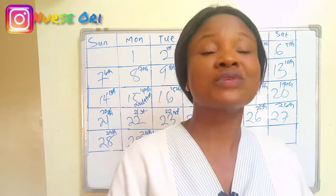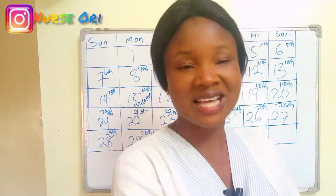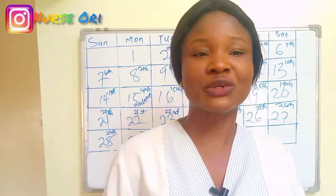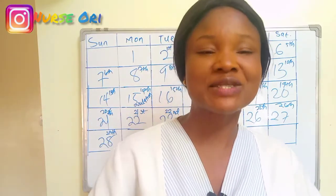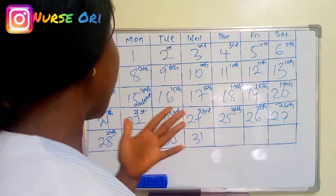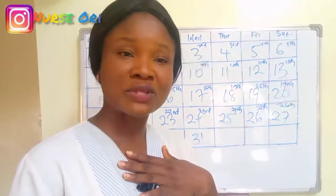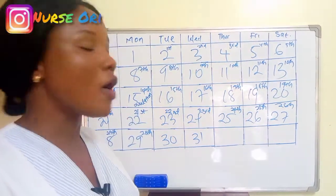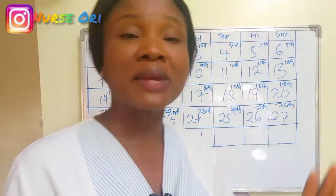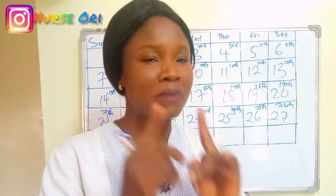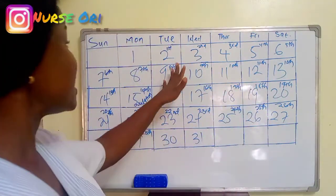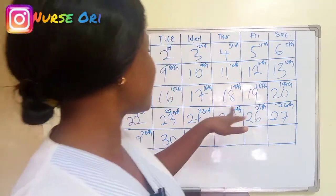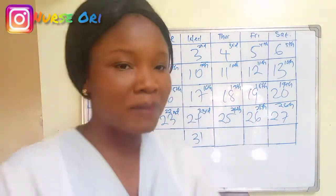Ovulation in itself is a process. So there are fertile days that lead up to the ovulation. Now I'm using myself as an example. Let's assume that my menses started on the second day of this month. So this second day automatically becomes the first day of my menstrual cycle. Your menses may start on the 9th, the 18th, or the 19th — the day your menses starts is the first day of your menstrual cycle.